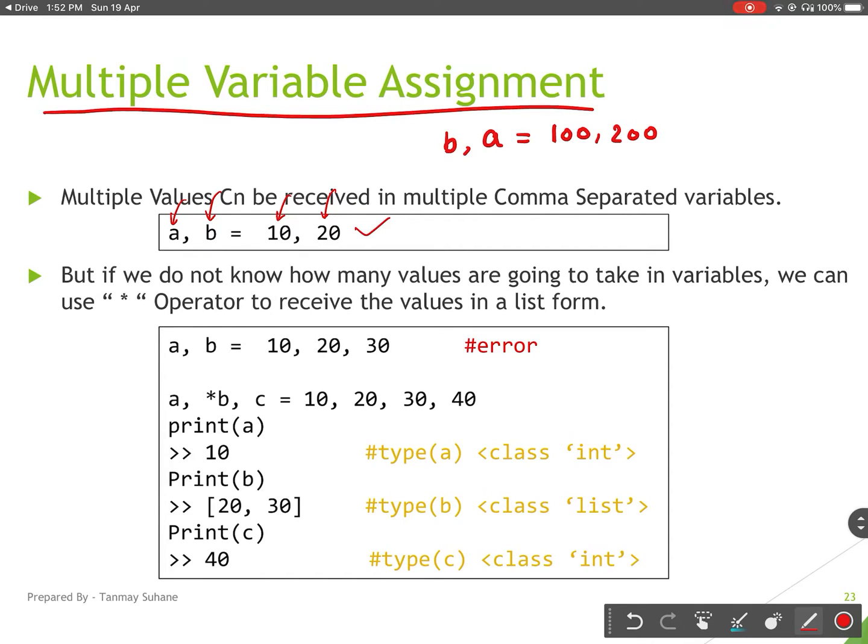Let us assume that you have to assign n number of values in some variables, but you don't know how many values are going to come. See this example: here three values are coming and I have given only two variables.